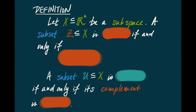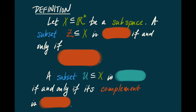Let's start with the definition. Let X be a subspace of Euclidean space R^n as usual. A subset Z of X is closed if and only if it is equal to its closure. Notice that one always has a containment of Z inside the closure of Z, but in order for Z to be closed we demand that these two things be actually equal. So in particular we require that any point that is close to Z is actually contained in Z.